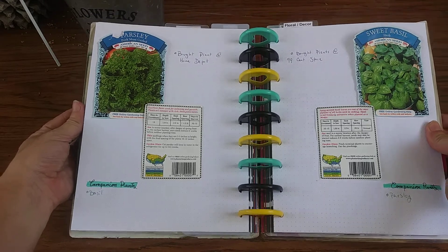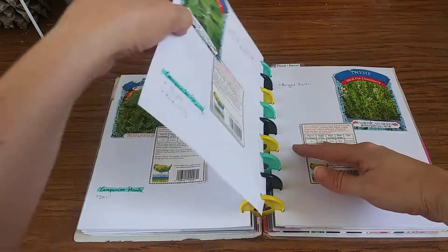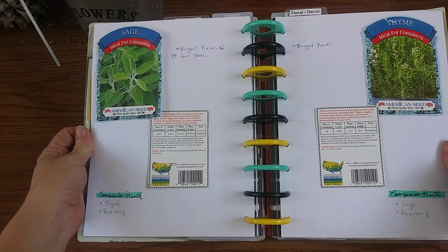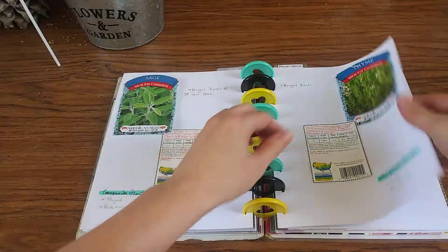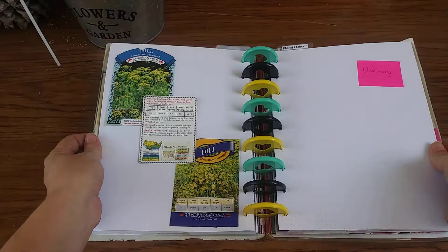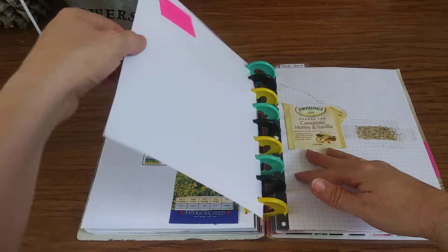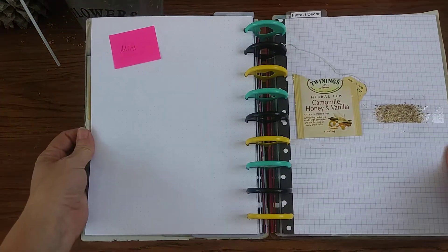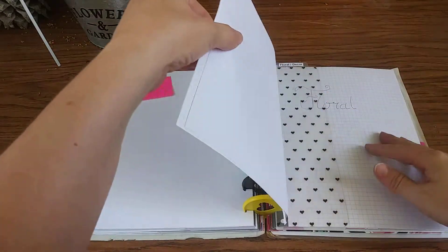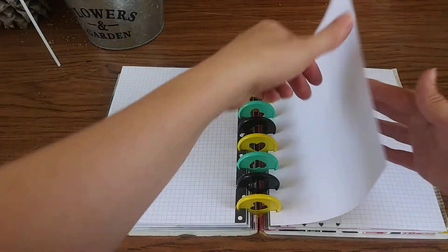Parsley and sweet basil, sage and thyme, dill and rosemary, mint and chamomile. And that's the herbal section.